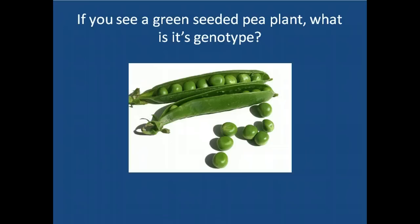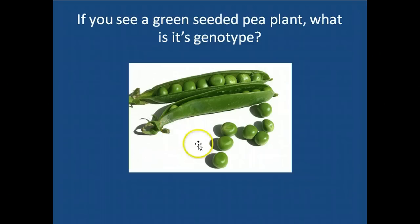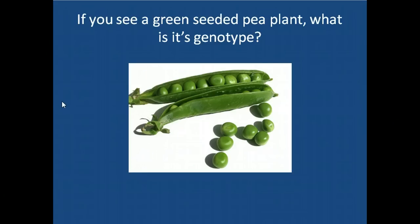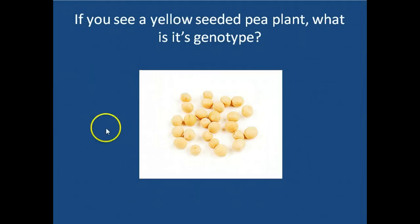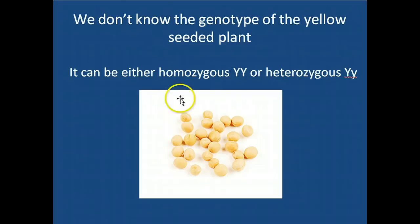One of the things that's important in Mendelian genetics is trying to figure out what genotypes individuals are. If you see a green seeded pea plant, green seeds are recessive — the allele for green seeds is recessive, and the corresponding yellow seeded allele is dominant. So if you look at a green seeded pea plant, you know that its genotype is homozygous recessive, or two little y's. If you see a yellow seeded pea plant and try to figure out its genotype, you don't really know — that individual could be homozygous dominant or heterozygous.